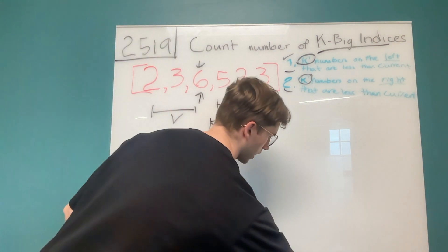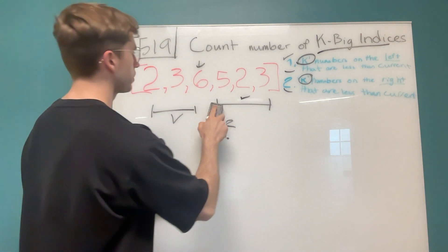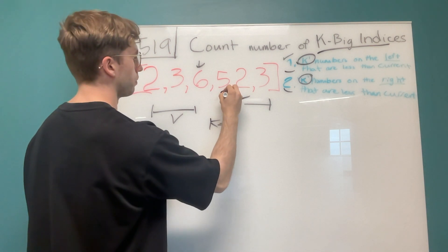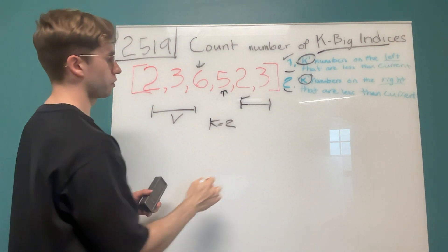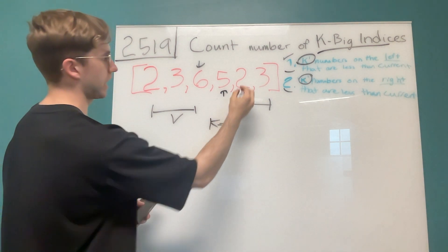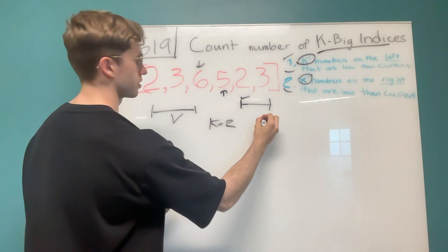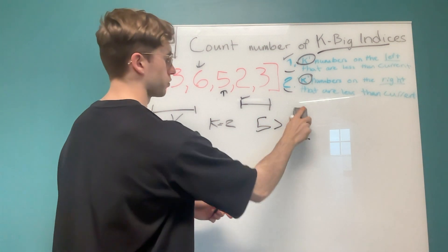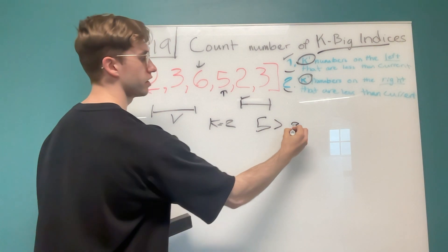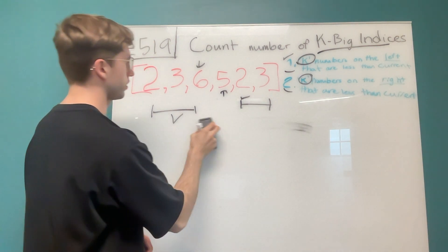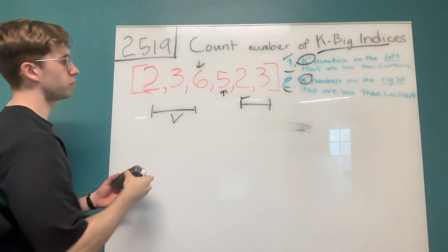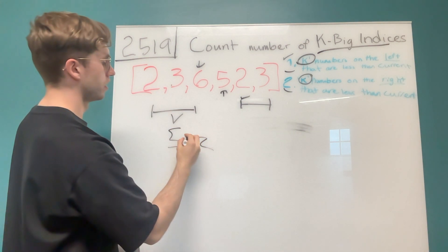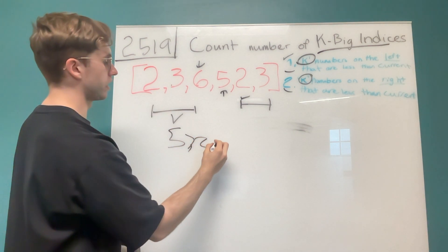If we also look at five here, on the right-hand side we have k numbers that are less than five, because five is greater than two and also greater than three. And on the left-hand side, five is also greater than two and three.